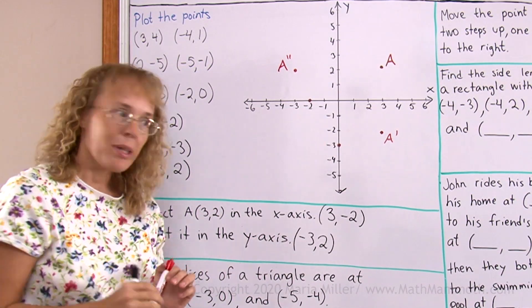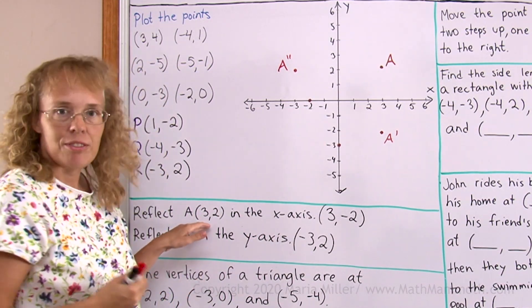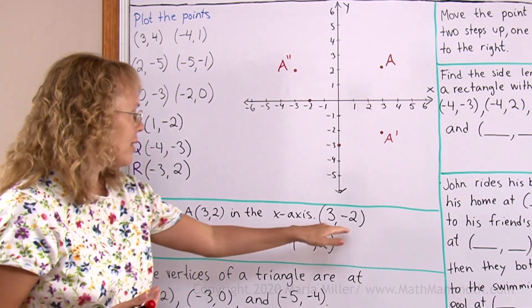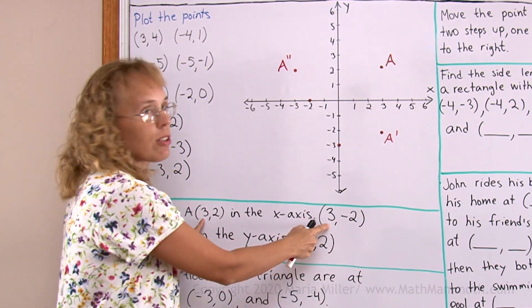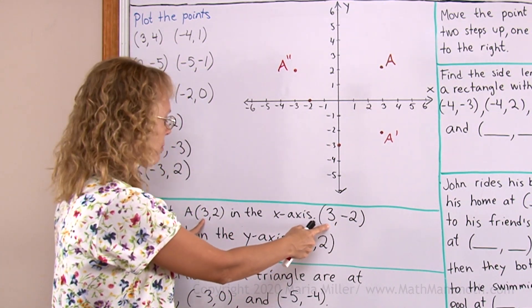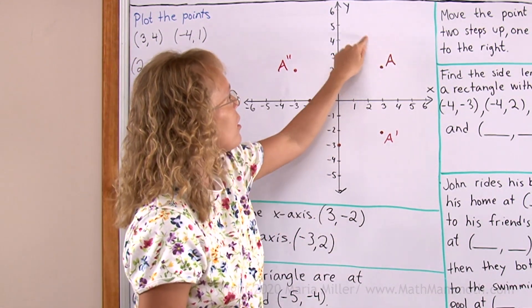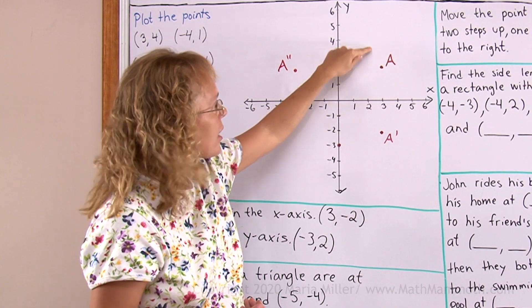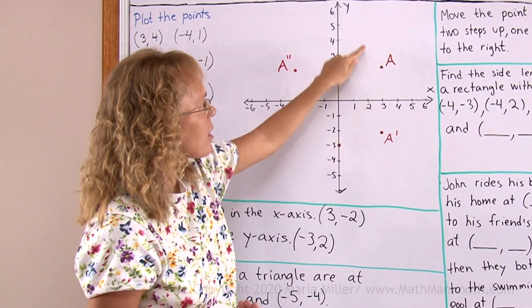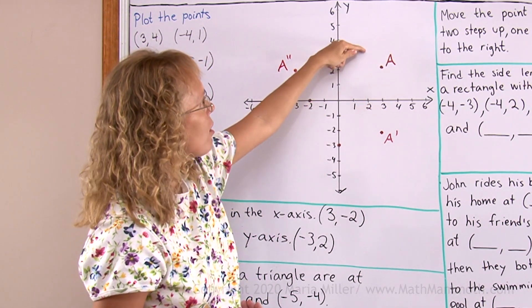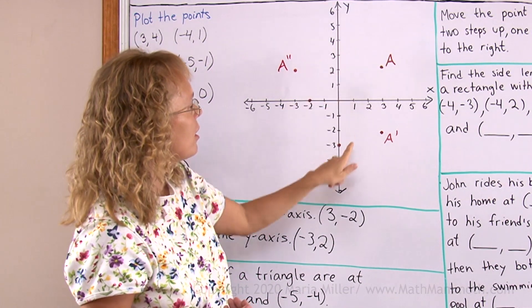Now notice real quick that when I reflected the point in the x-axis then its x-coordinate did not change. But the y-coordinate became the opposite. If you have any point here and you reflect it in the x-axis it's going to have the same x-coordinate, but the y-coordinate changes from whatever it is here to the opposite.